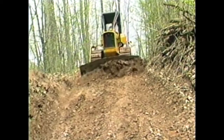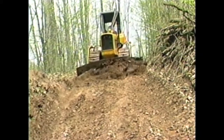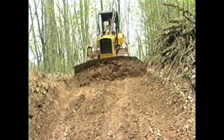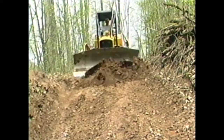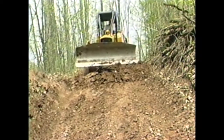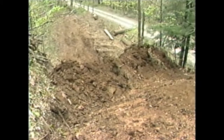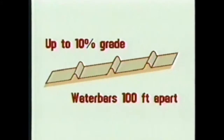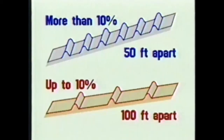Give the water bar about a 30-degree cant downslope. And since it will settle, make it at least two feet high. Make sure the end is downslope and open. Water bars should be spaced not more than 100 feet apart on roads with grades up to 10%, and 50 feet apart on steeper sections.